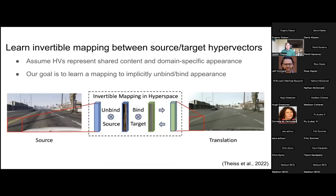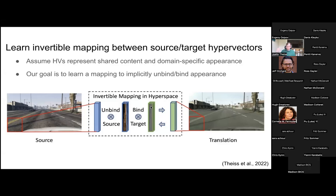Our method was inspired by the VSA approach to try to address this — reformulating the problem from thinking about image space to learning a mapping between source and target hypervectors. We assume we can have a hypervector representation of image patches with shared content but domain-specific appearance. Our goal is to learn a mapping that implicitly unbinds source appearance and binds target appearance during translation, and conversely inverts that mapping to go back from translated to source hypervectors. This is an implicit unbinding and binding — we don't do it explicitly.